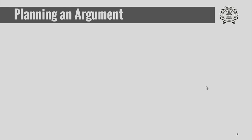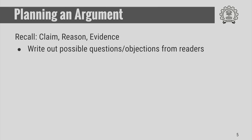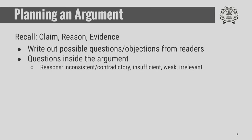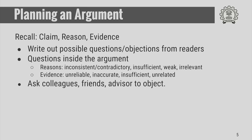How do you plan to write an argument? Recall that the answer has three parts: claim, reason, and evidence. For each of them, write down possible questions or objections that readers can raise. There could be several questions inside the argument. For example, reasons could be inconsistent, contradictory, weak, or irrelevant. Evidence can be unreliable, inaccurate, or insufficient. You must talk to your colleagues, friends, and advisor to raise objections against each of these reasons and evidence.